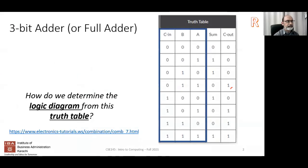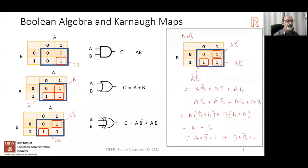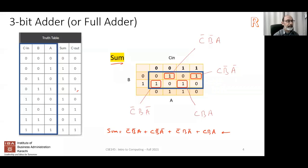This is a review of the previous lecture. We spoke about the three-bit address, looked at the truth table, and then looked at how you could actually implement this using gates. We introduced the concept of Boolean algebra and Karnaugh maps, and looked at how Karnaugh maps can be used to simplify Boolean expressions.